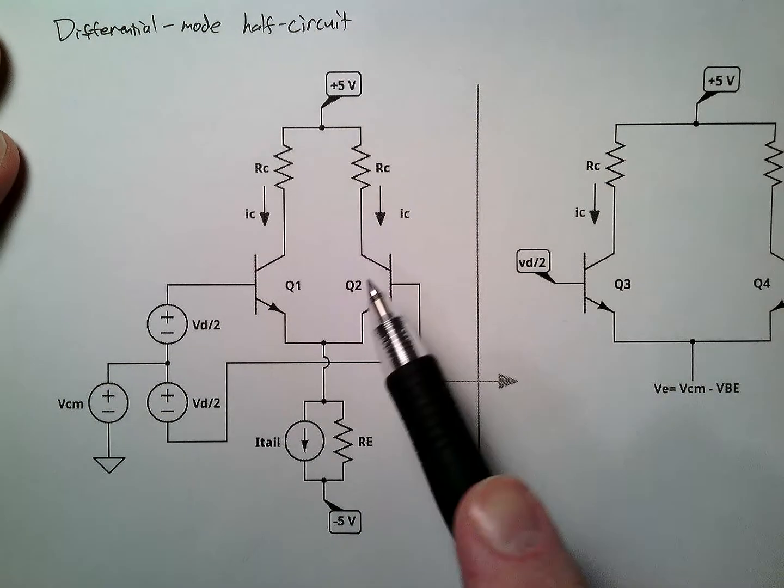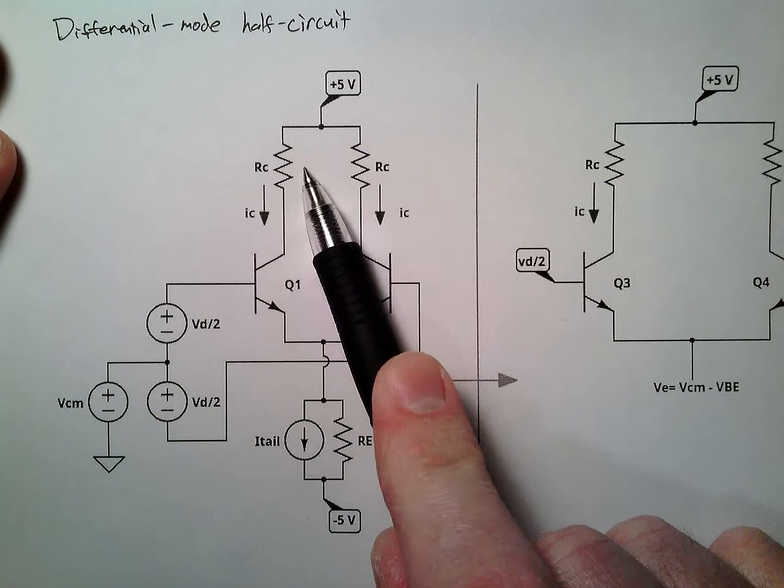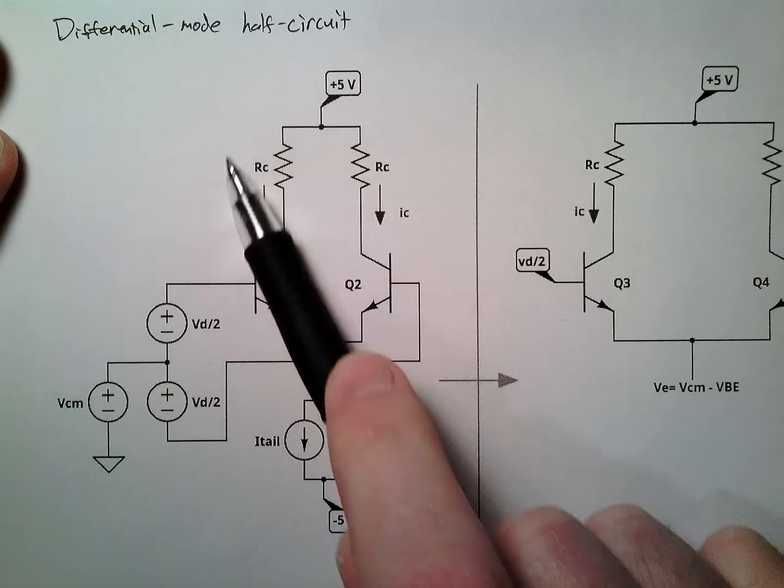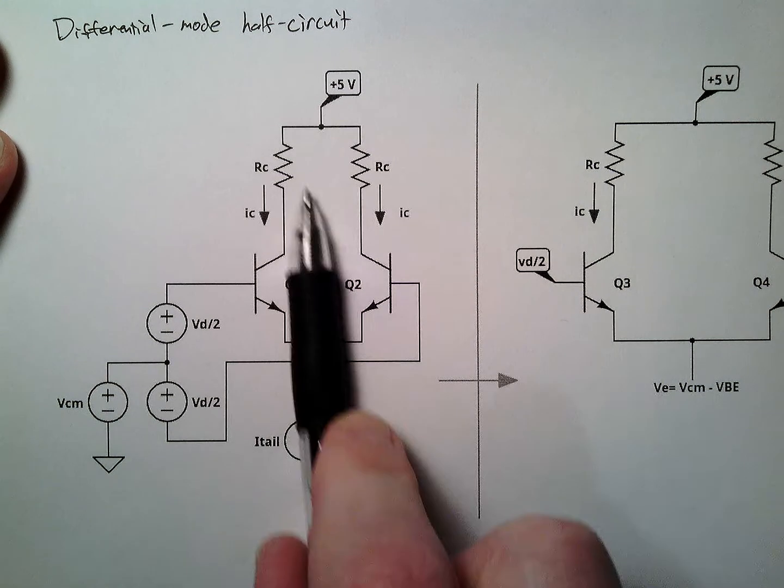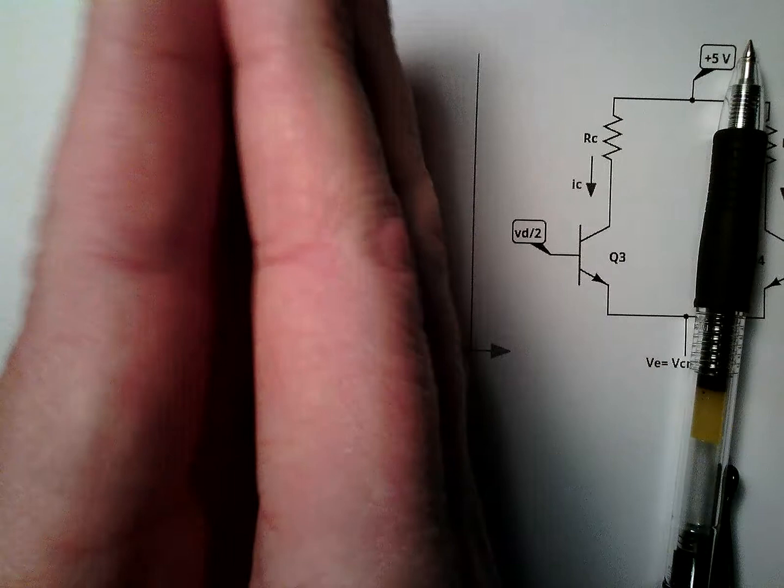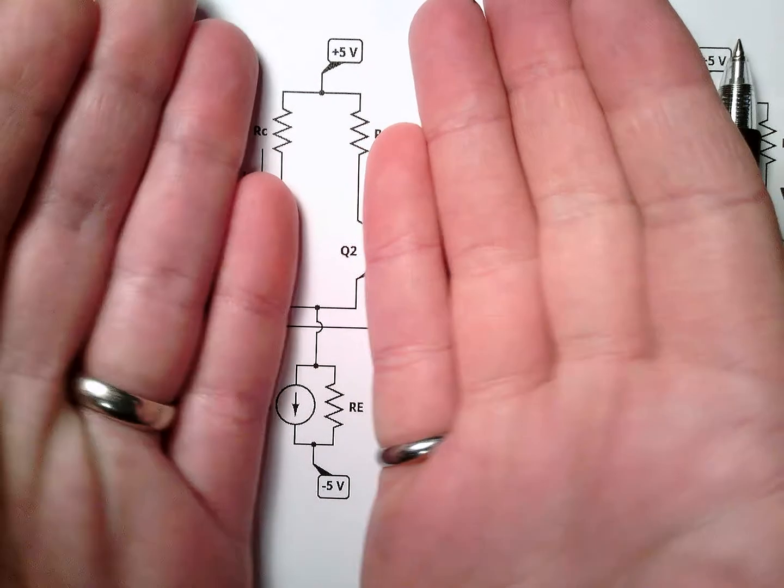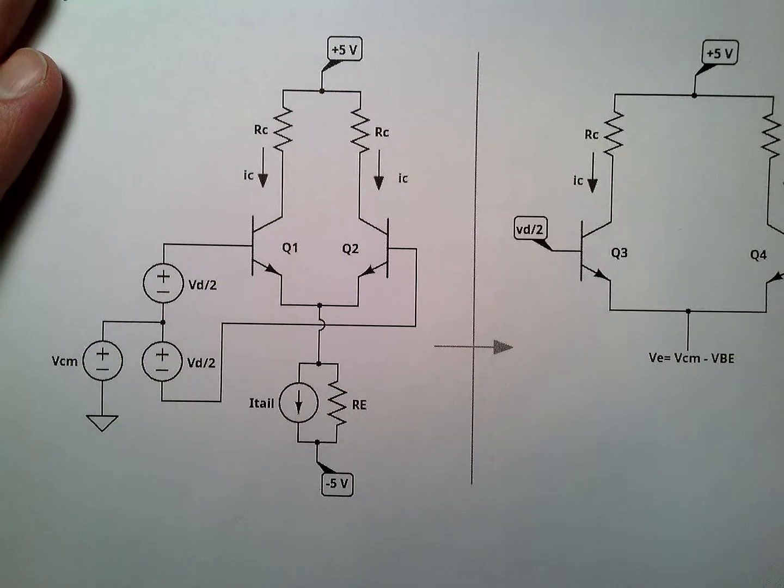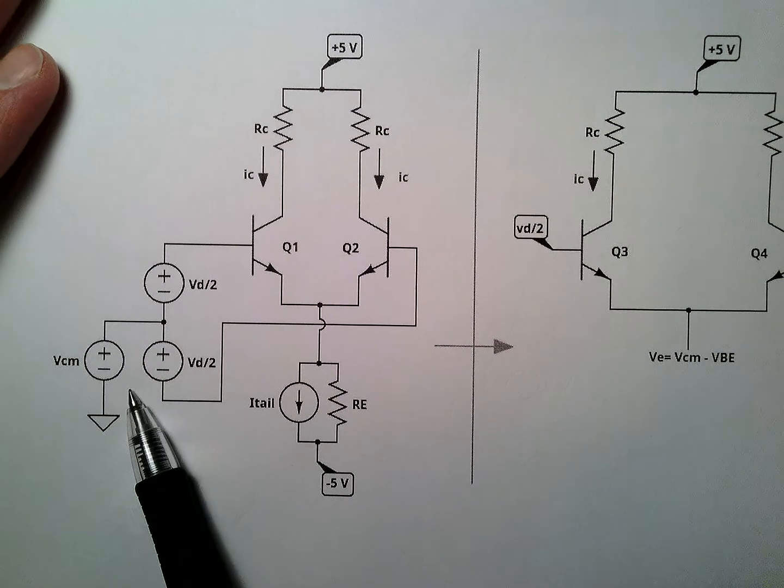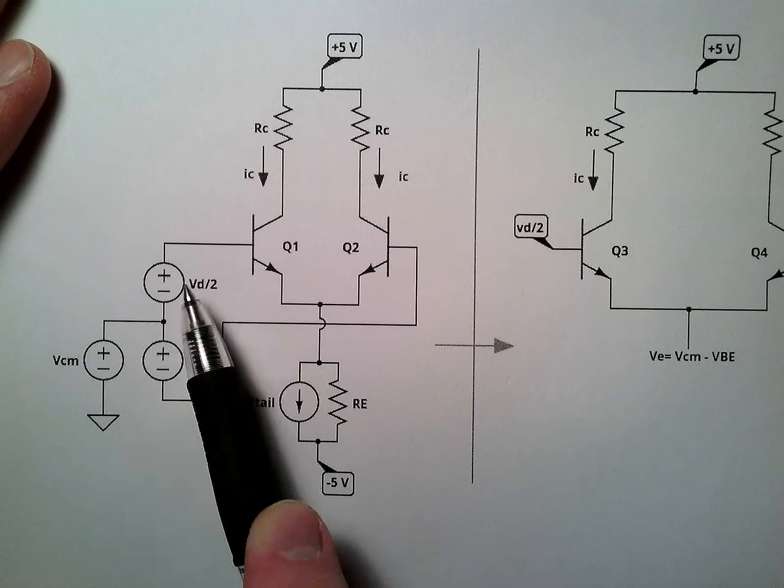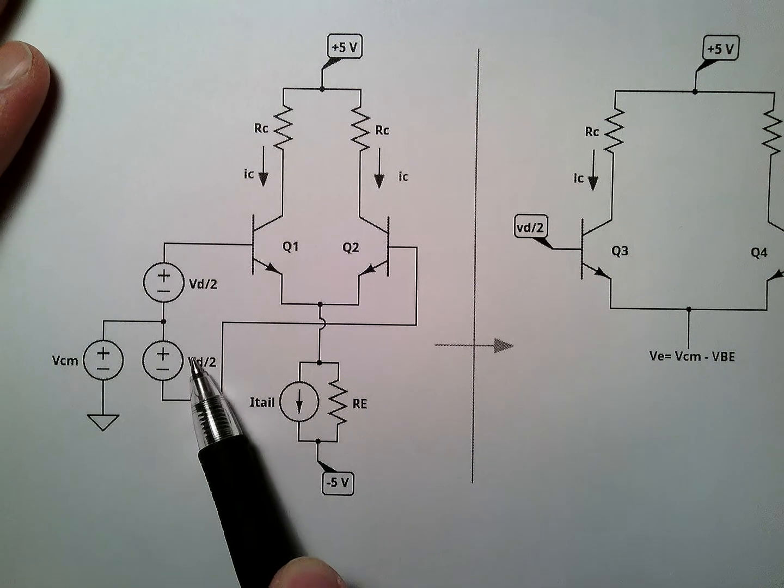Alright. Here we go. Here's our circuit of destiny. We have two collector resistors. We can put really anything up here, but right now the important part is that we have some symmetry in the circuit.